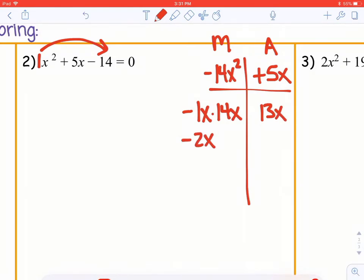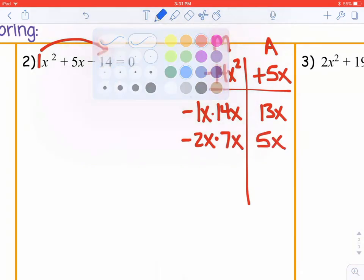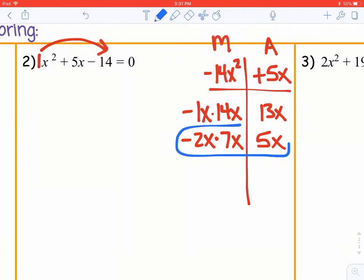If we have negative 2x times 7x, those add up to 5x, which is what we need. So let's stop there and take our numbers over here and replace 5x with negative 2x plus 7x. Bring down the first term, bring down the last term, and from there you can just do grouping to finish solving.